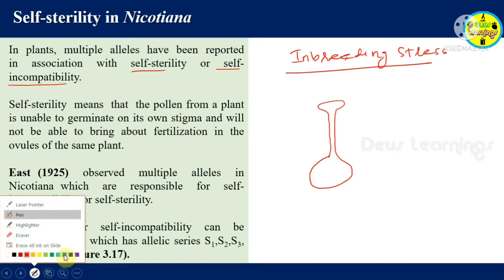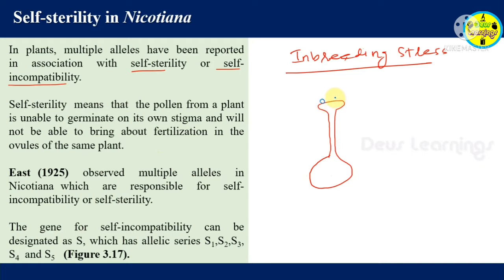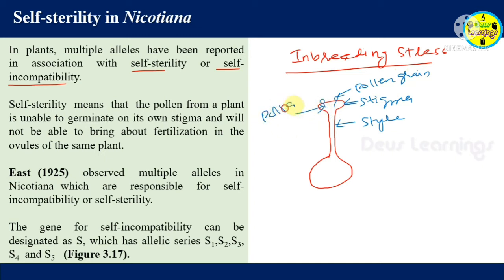We have a pollen grain which lands on the stigma. A pollen tube forms and takes the male gamete to the ovule — that's reproduction in plants. We have the stigma, style, pollen grain, and pollen tube. The pollen grain is haploid because it is a product of meiosis, and the stigma is diploid.